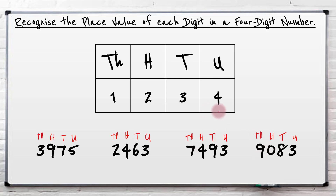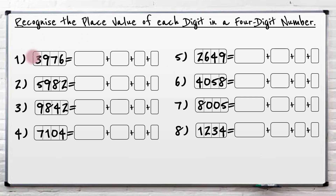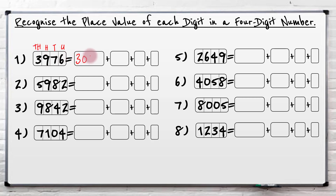So let's put this into practice in the activity. We've got three thousand nine hundred and seventy six, and we need to split it up into its component parts. I look at this number and think: how many thousands, hundreds, tens and units have I got? I always work my way across — units, tens, hundreds, thousands. So I've got three thousands, then zero hundreds, zero tens and zero units.